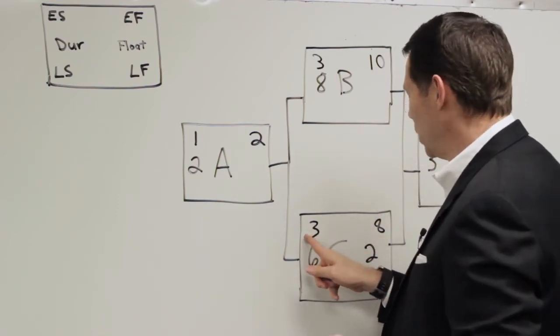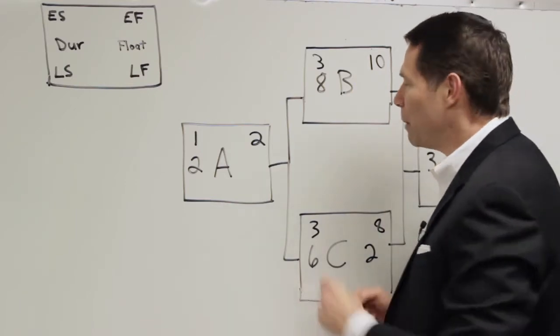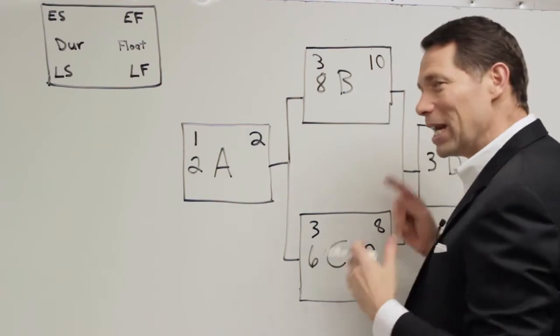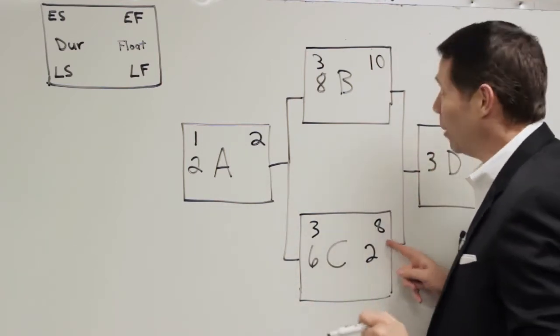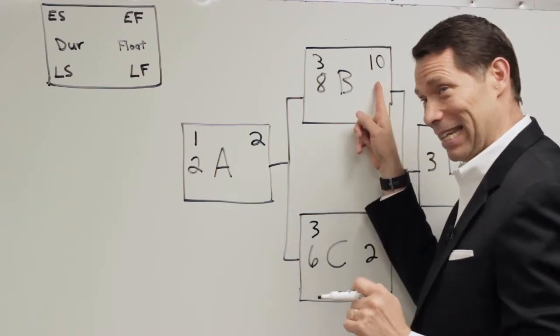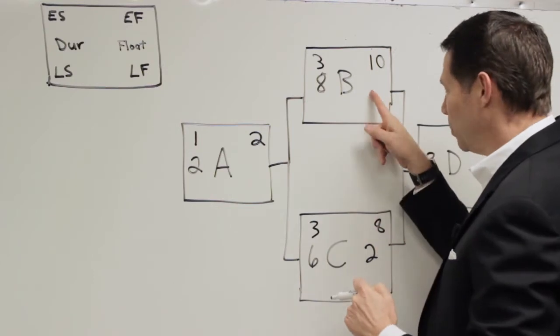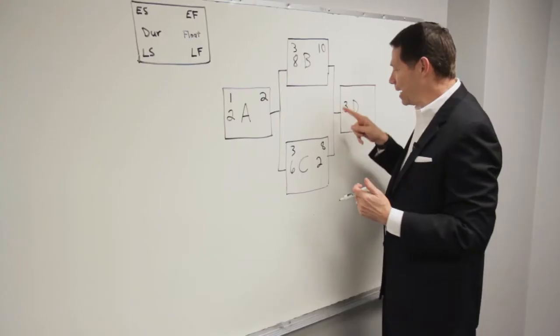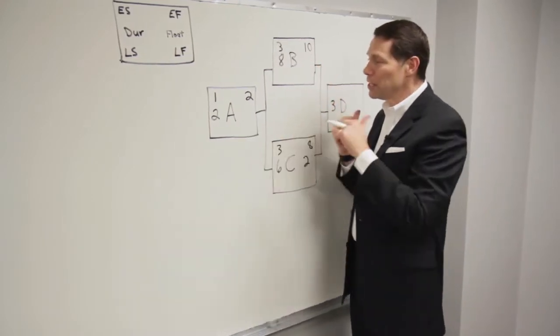My early start is three. My early finish is eight. I've got three and 10. Now remember, we added one when we went over the divide. We're going to have to add one when we go over the divide here. But do we add one to the eight or do we add one to the 10? I want you to think about this. D can't start until B and C are done.